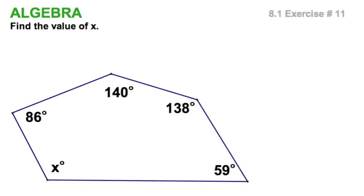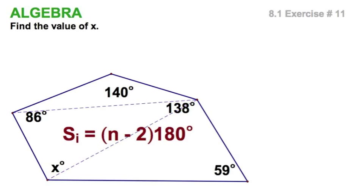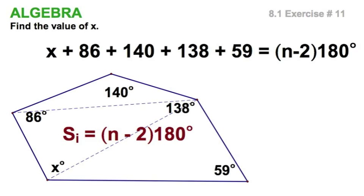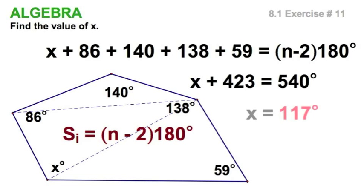Here we have a pentagon with one unknown angle. So let's find the sum of the interior angles. You know that's 540. We've done this before. We'll set up this exercise right here, add up all the angles, set them equal to our 540. And in this case, we'll just subtract the 423. And we're done.